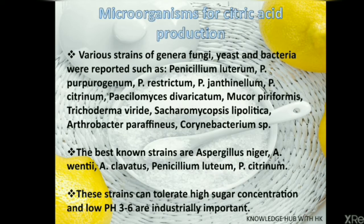A number of microorganisms are used for the production of citric acid, including fungi, yeast, and bacteria such as Penicillium luteum, Penicillium purpurogenum, Penicillium restrictum, Penicillium citrinum, Mucor piriformis, Trichoderma viridae, Arthrobacter paraffinus, and Corynebacterium species.